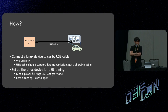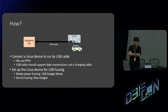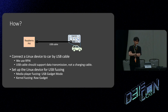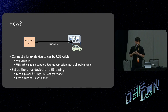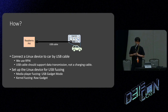To use USB gadget mode and raw gadget, we need a Linux device. In this research, we use a Raspberry Pi and connect it to the car by a USB cable. You should use a USB cable that supports data transmission — some USB cables only support charging and cannot be used for this fuzzing. We set up the Raspberry Pi for USB fuzzing: for media player fuzzing, we emulate it as a USB storage using the USB gadget; for kernel fuzzing, we use the raw gadget.